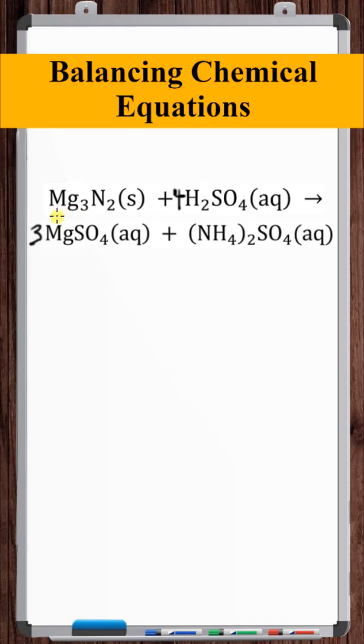Okay, so we know our magnesiums are balanced. We know the SO4s are balanced. So let's look at nitrogen. We've got two nitrogens on the left, two nitrogens on the right.